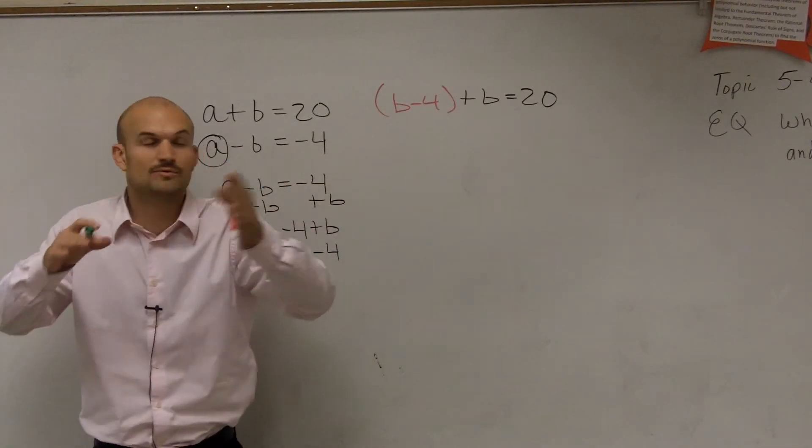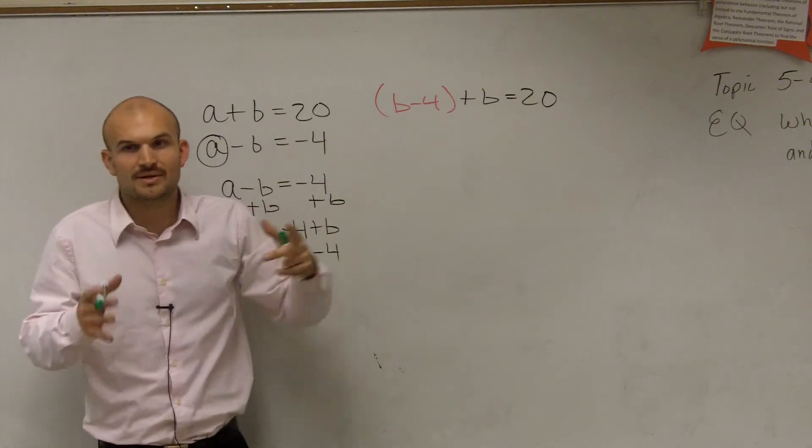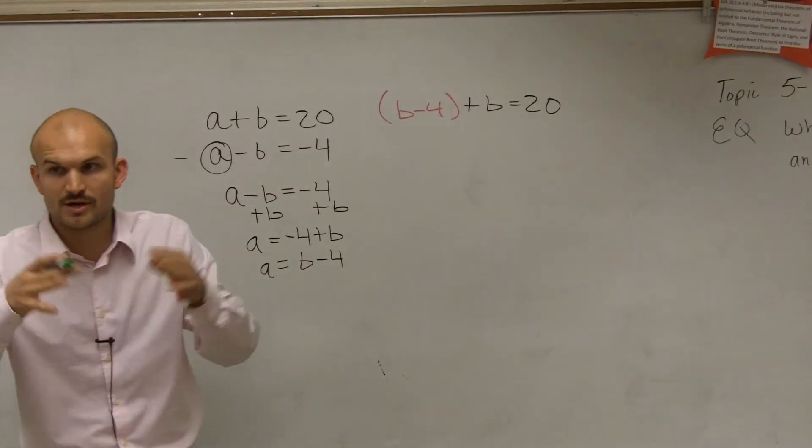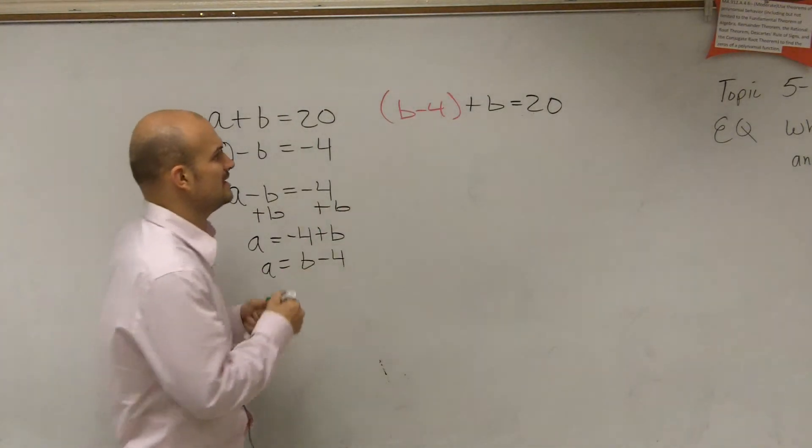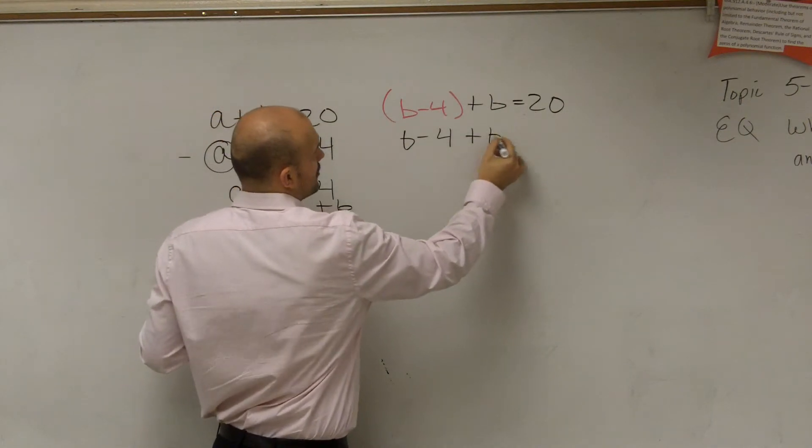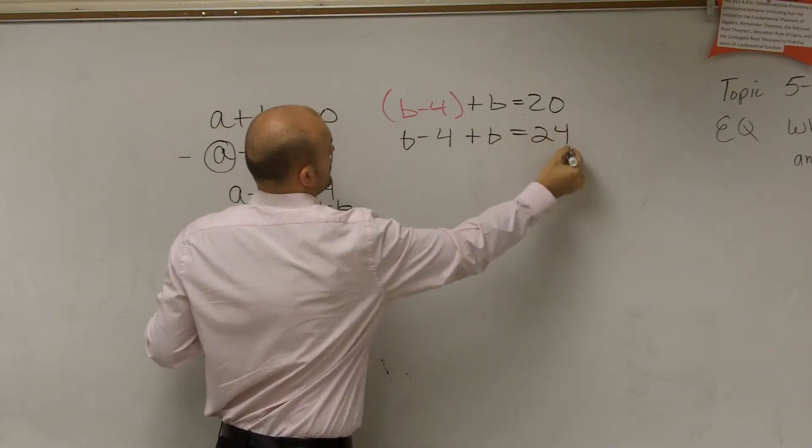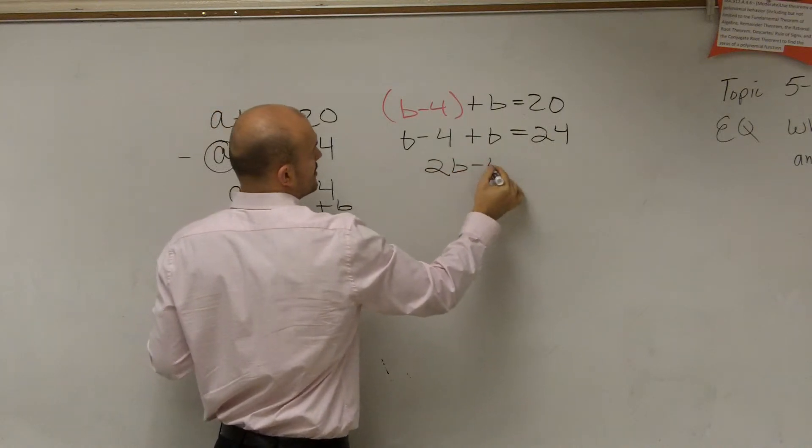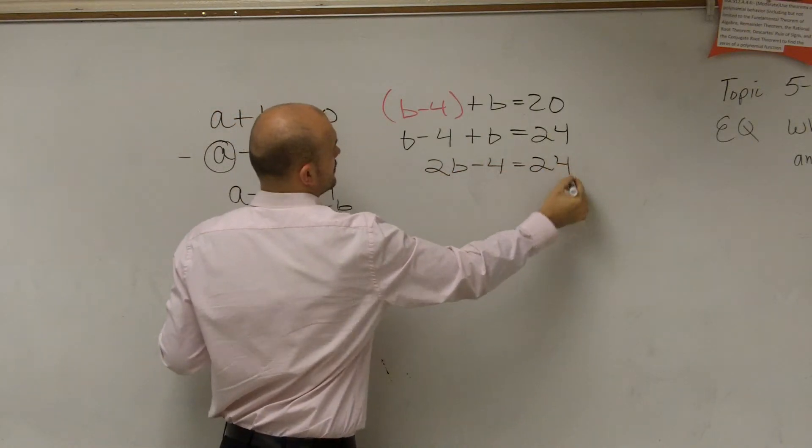So that's why you always want to put parentheses in there. But in this case, I don't really need these parentheses anymore. The parentheses aren't doing anything for my problem. So therefore, now I add, combine my like terms, so I get 2b minus 4 equals 24.